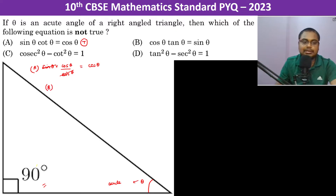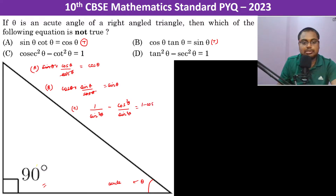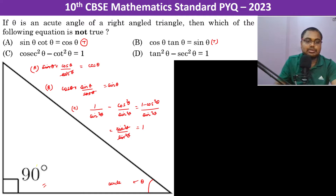Option B: cos theta multiplied by tan theta equals cos theta times sine theta divided by cos theta, which equals sine theta — true. Option C simplifies as 1 over sin²θ minus cos²θ over sin²θ, which equals 1 minus cos²θ over sin²θ, and since 1 minus cos²θ equals sin²θ, the result is 1 — also true.